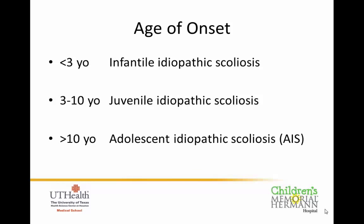We further divide idiopathic scoliosis based upon the age of onset. Less than three years old is infantile idiopathic scoliosis; three to ten years old is juvenile; and greater than ten years old is adolescent. Today we're focusing on adolescent idiopathic scoliosis, often abbreviated as AIS.